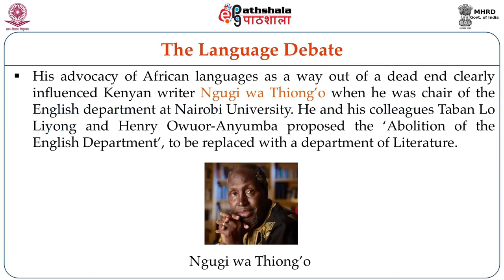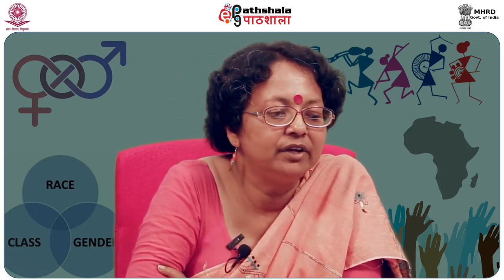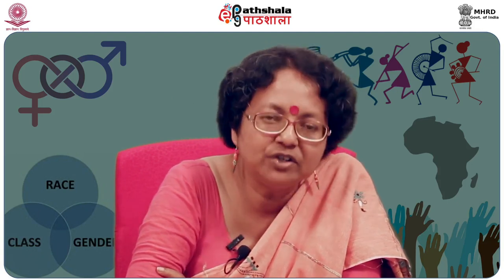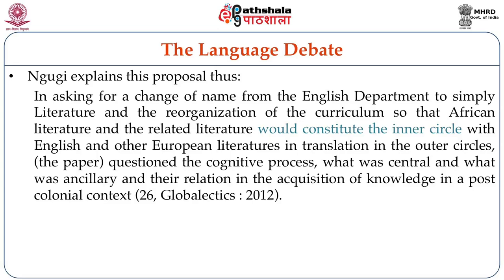In response to this, Ngugi wa Thiong'o used Wali's position to propose the abolition of the English department in the University of Nairobi in Kenya, where he at that point headed the English department. Along with two colleagues, Taban lo Liyong and Henry Owuor Anyumba, Ngugi proposed the abolition of the English department based upon three particular aspects. Ngugi explains: in asking for a change of name from the English department to simply 'Literature' and the reorganization of the curriculum so that African literature and related literature would constitute the inner circle, with English and other European literatures in translation in the outer circles, the proposal questioned what was central and what was ancillary in the acquisition of knowledge in a post-colonial context.